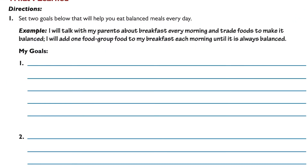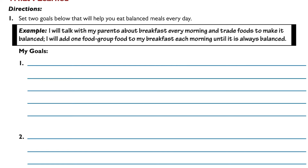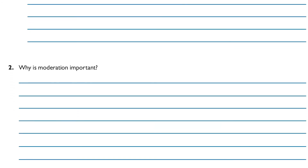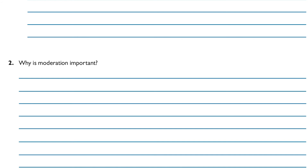Page 10. There are two questions that you will need to answer. For question one, you're going to set two goals below that will help you eat a balanced meal every day. The examples they gave of a goal are: I will talk with my parents about breakfast every morning and trade foods to make it balanced. Another example: I will add one food group food to my breakfast each morning until it is always balanced. Go ahead and write your two goals. Once you're done, go ahead and move on to question number two and answer: why is moderation important?